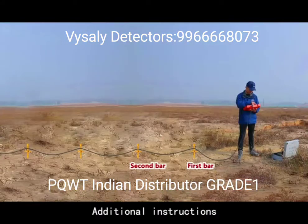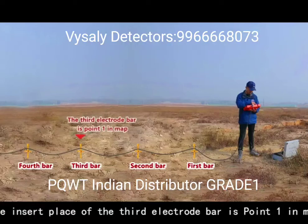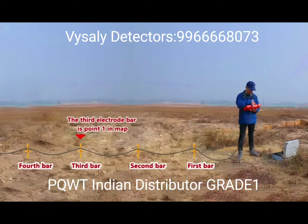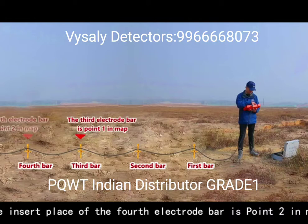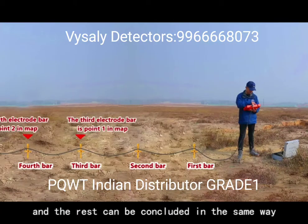Additional instructions: The insert place of the third electrobar is 0.1 in the map. The insert place of the fourth electrobar is 0.2 in the map, and the rest can be concluded in the same way.